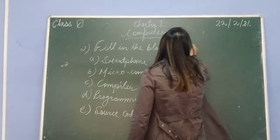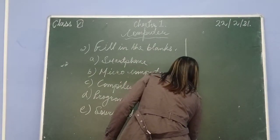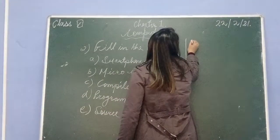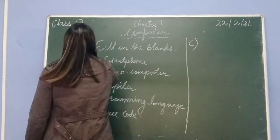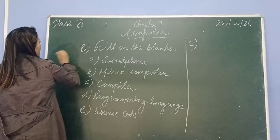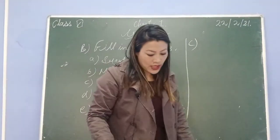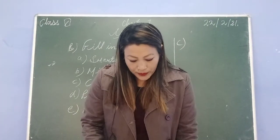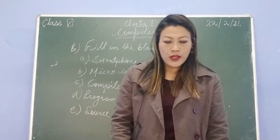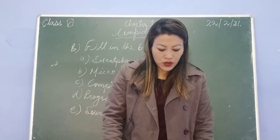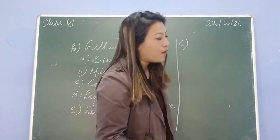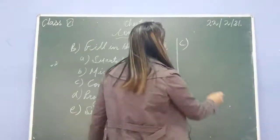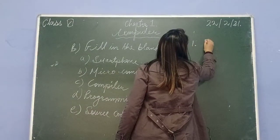Now I will do true and false - this is section C. Number 1: Cray 1 is an example of a supercomputer. Is it true or false? You can have a look at your PDF. Cray 1 is an example of a supercomputer - the answer is true.